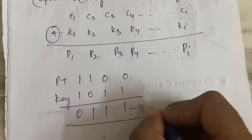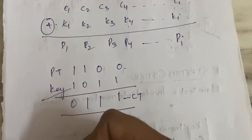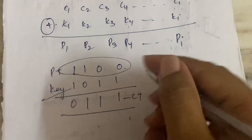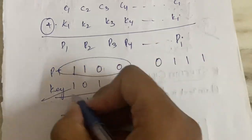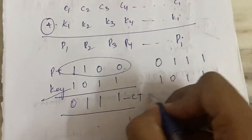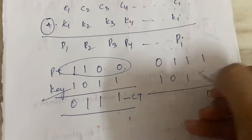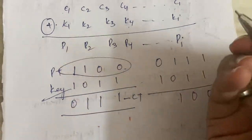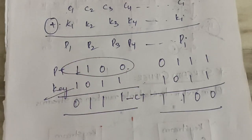Now using the cipher text 0111 and the key 1011, we generate the plain text. XOR: 0 and 1 are different so 1; 1 and 0 are different so 1; 1 and 1 are same so 0; 1 and 1 are same so 0. We get 1100, which is our original plain text. So the bitwise XOR operation correctly recovers the plain text.